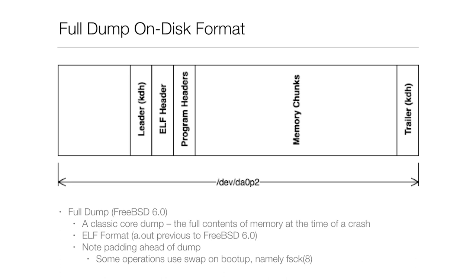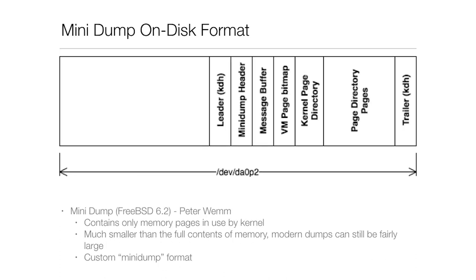The format is inside the leader and trailer, which is exactly the same as a binary. The leader and trailer contain data about the dump itself. The mini-dump on-disk format is a little different — it's not a binary. Introduced by Peter Wham in FreeBSD 6.2, it contains only memory pages in use by the kernel — probably all the relevant memory to diagnose the problem that caused the crash. The purpose is to have something much smaller than the full contents of memory. The mini-dump format is not an ELF; it's a custom mini-dump format with an extra header explaining how the mini-dump is laid out and which parts of memory were and weren't dumped.